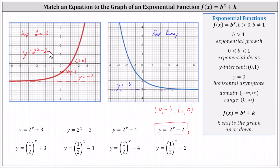Now looking at the exponential decay function on the right, because the horizontal asymptote is y equals negative three, the graph has been shifted down three units, and therefore k is negative three, which indicates the correct equation should be y equals one half to the power of x minus three.